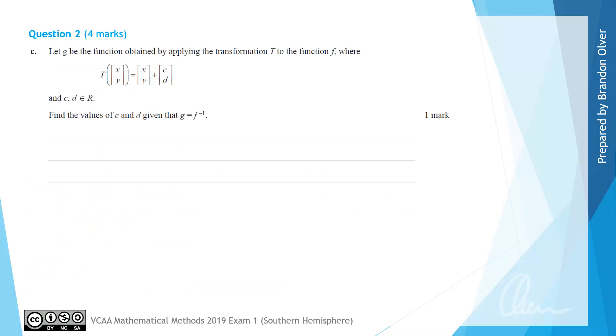For part c, we let g be the function obtained by applying the transformation t shown in matrix form to function f. t is the matrix transformation where we take x and y and add the matrix cd onto it. From transformation t we can see that essentially a translation of the graph is happening.